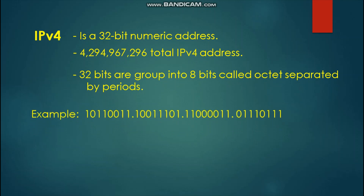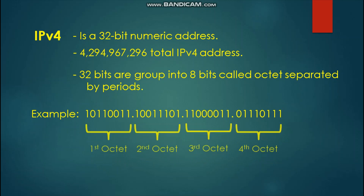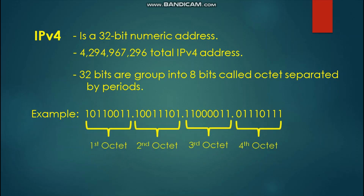Here is an example of binary bits grouped into 8 and separated by periods. Each group that has 8 bits is called an octet. We have four groups: the first octet, the second octet, the third octet, and the fourth octet.